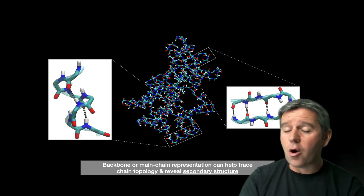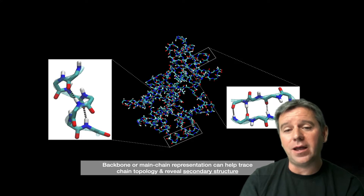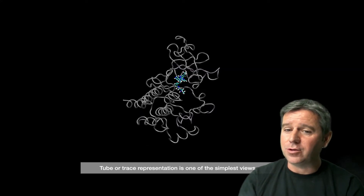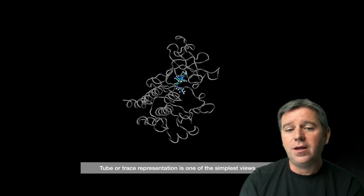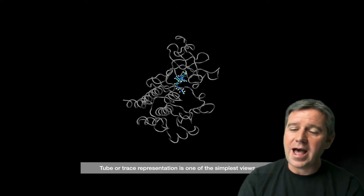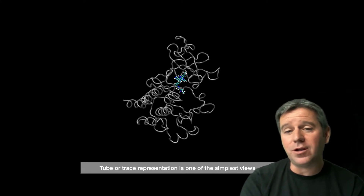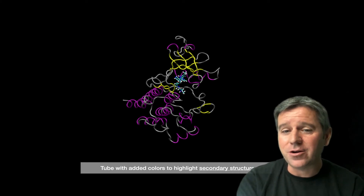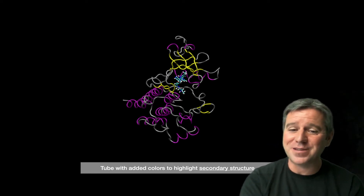I'm going to turn off all but one atom per amino acid — just the C-alpha atom — and draw a C-alpha trace through the protein. This is one of the simplest views of a protein. I'll then add color information: alpha helices in purple, beta strands in yellow, and the loops that join these secondary structure elements together in gray. These loops form the connections between secondary structures that give rise to the tertiary structure.